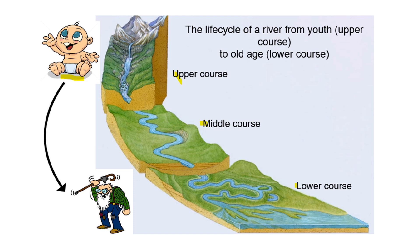If we look at the upper course, the youthful stage — lots of energy bouncing around all over the place, think of a two-year-old. The middle course has characteristics of both the upper and lower course. Then finally the lower course, the final stage of the river, it's old age — slower moving, a bit wider, perhaps wider around the middle, and a whole lot less energy. That means there's more deposition and less erosion in the lower course.